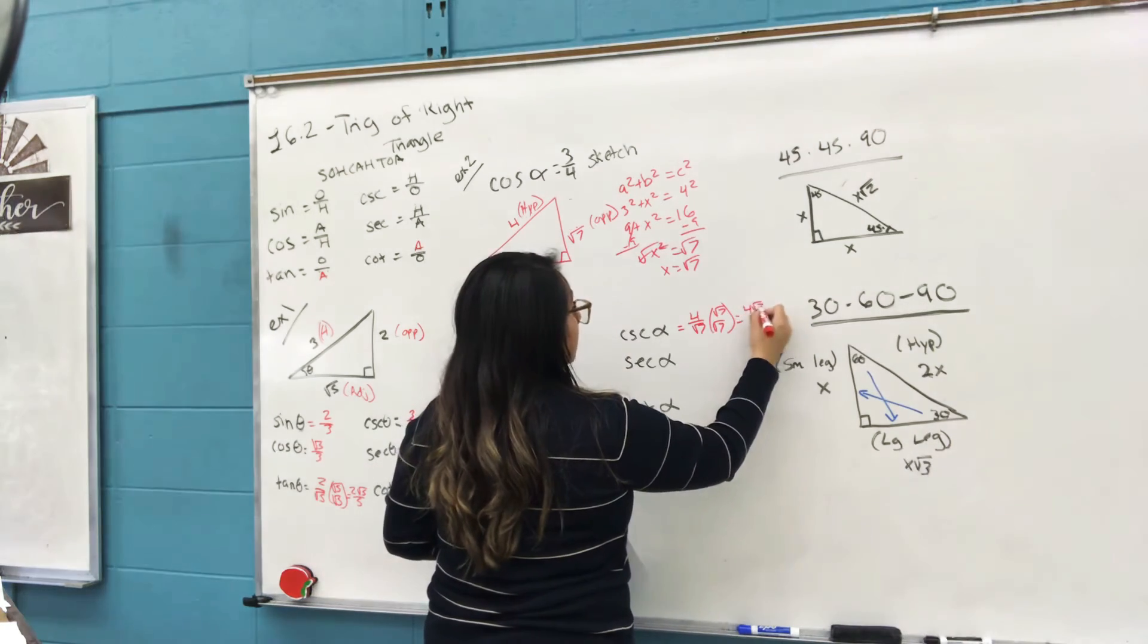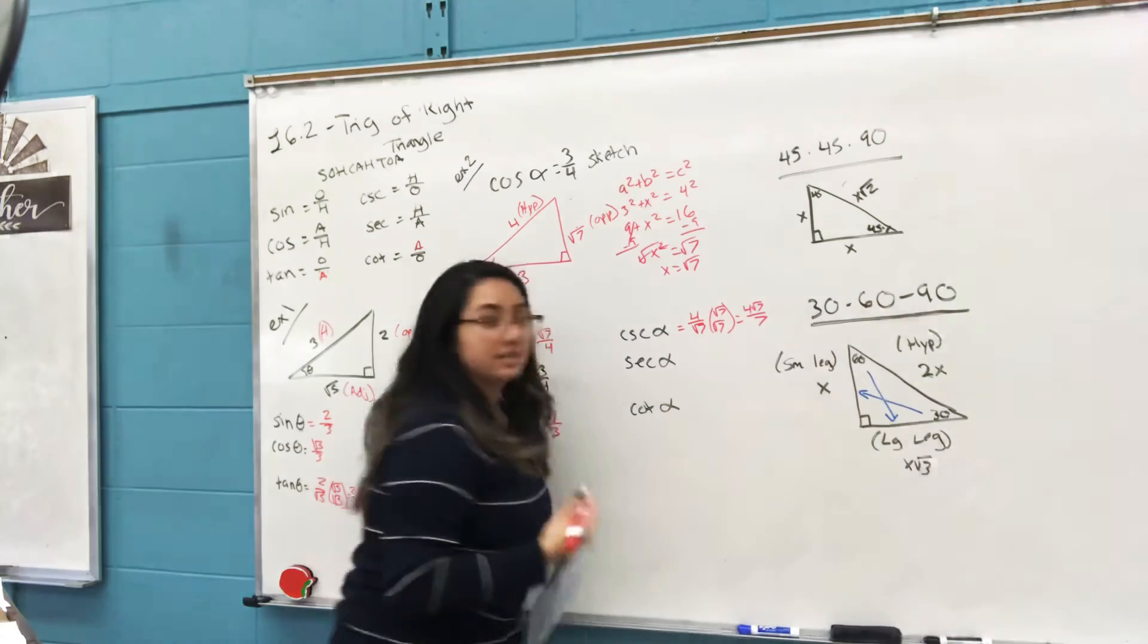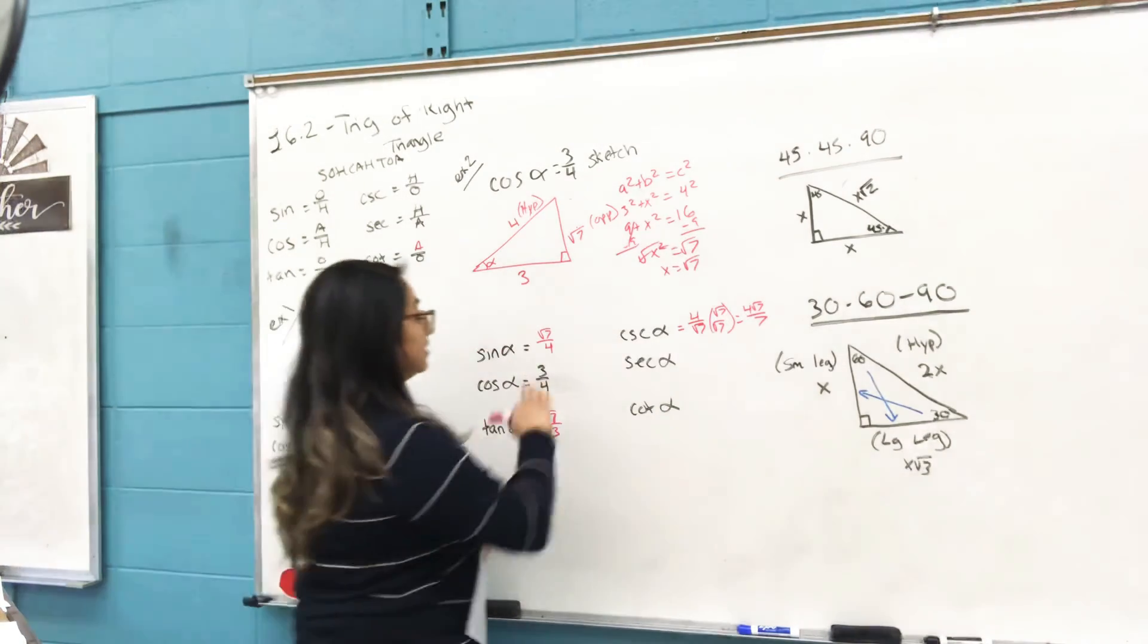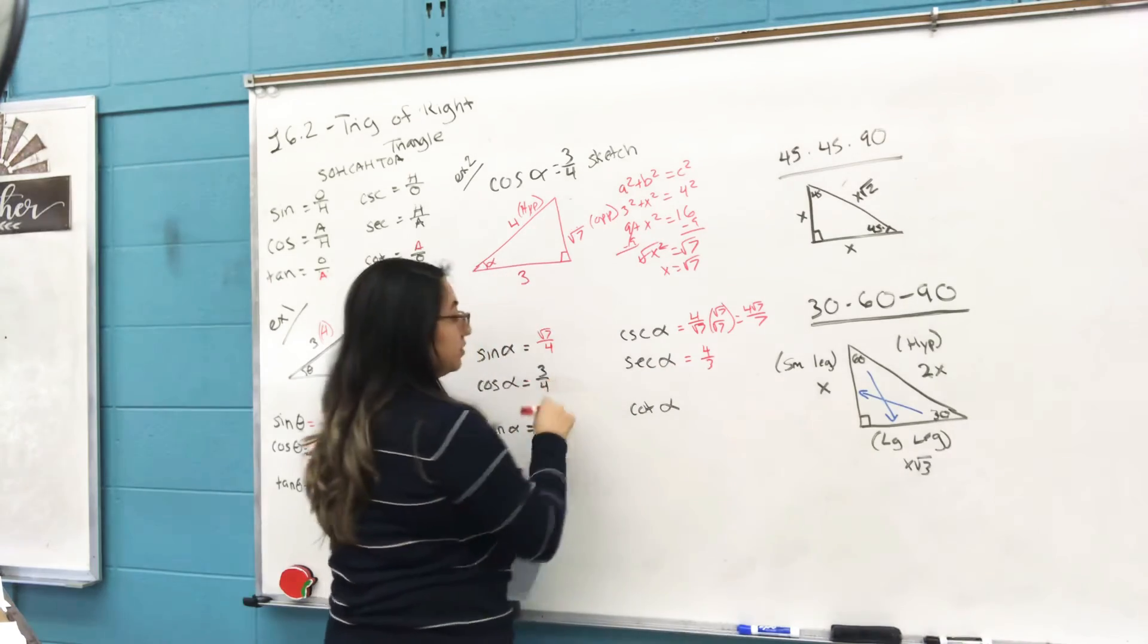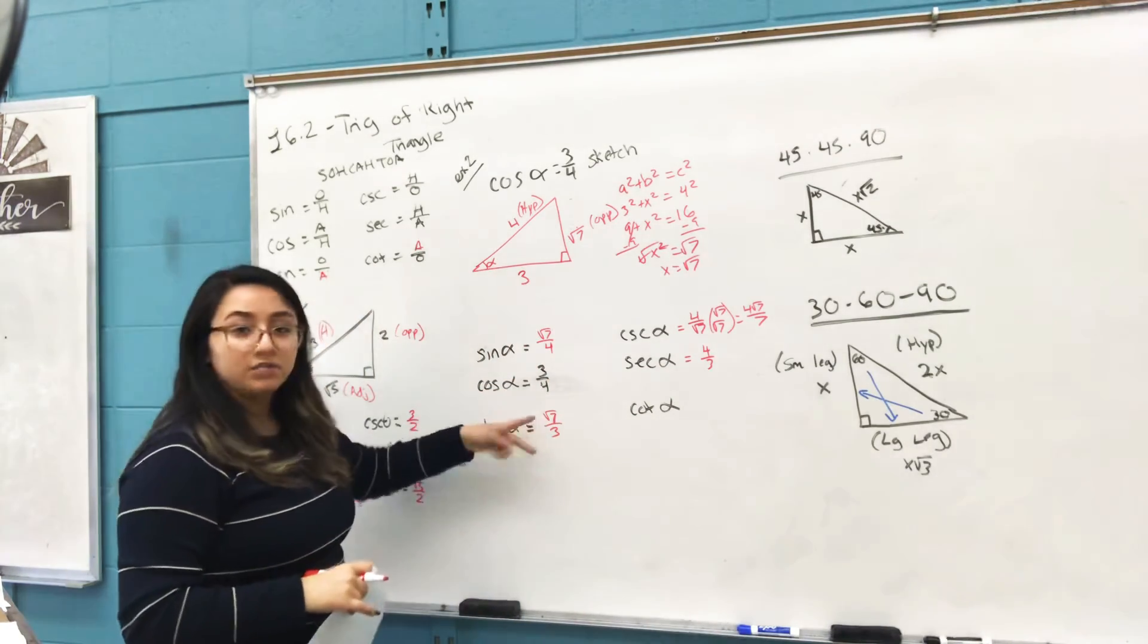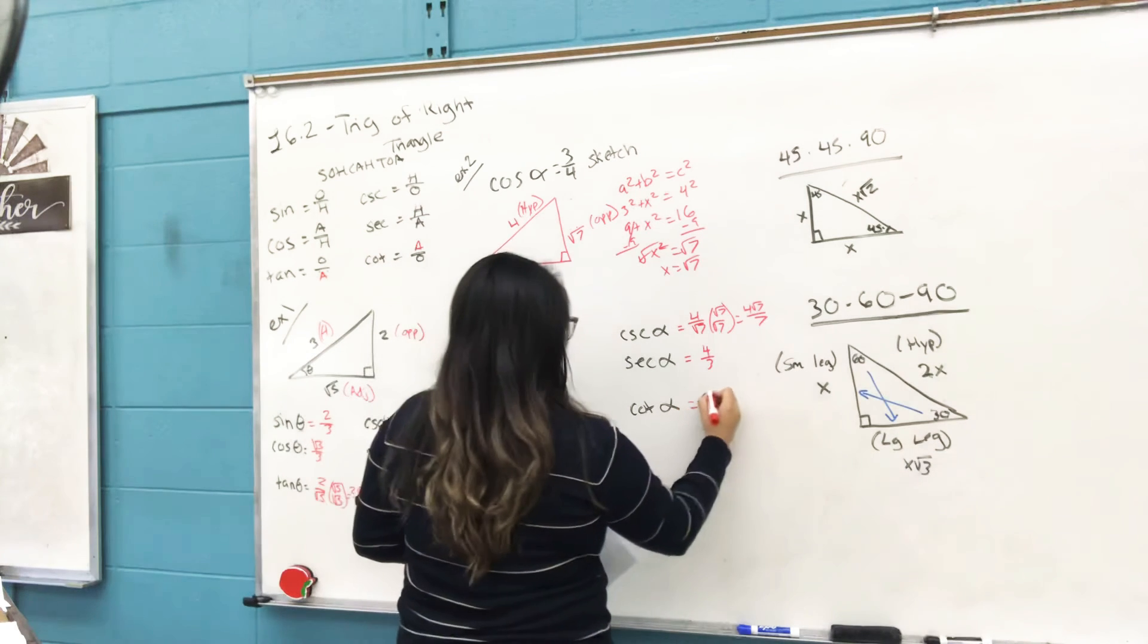4√7 over 7, and that's your cosecant. Secant: reciprocal of the cosine, which will be 4 over 3. You flip it.